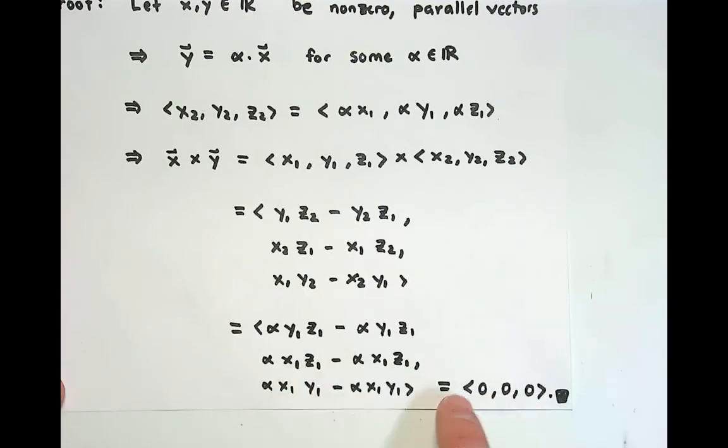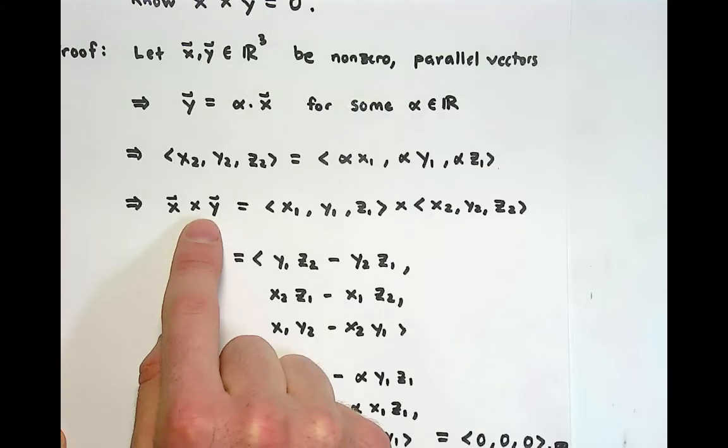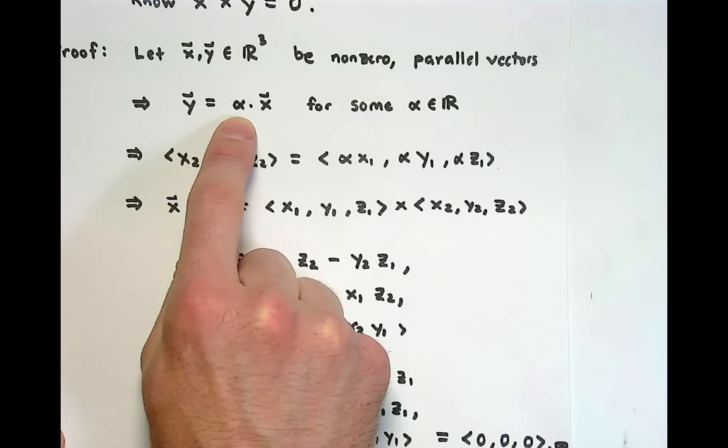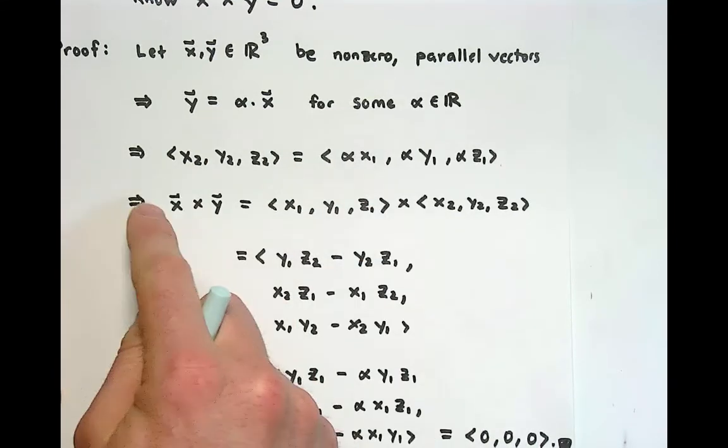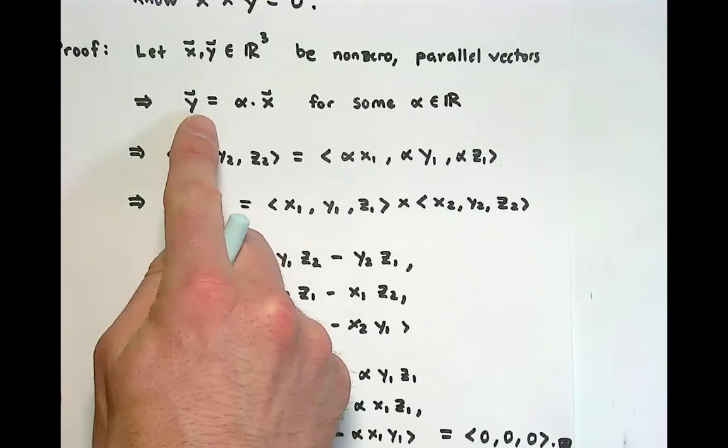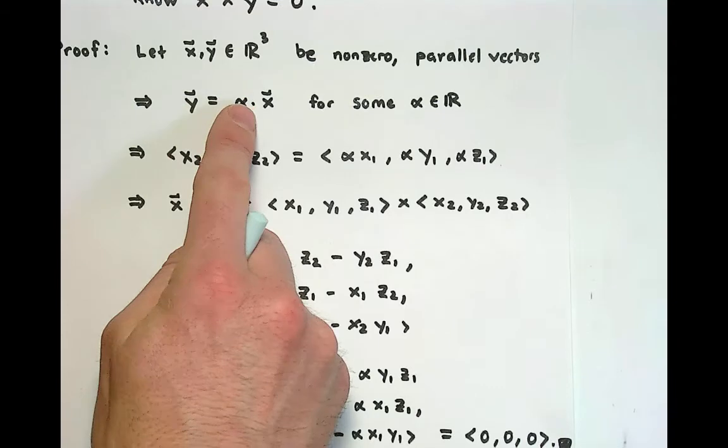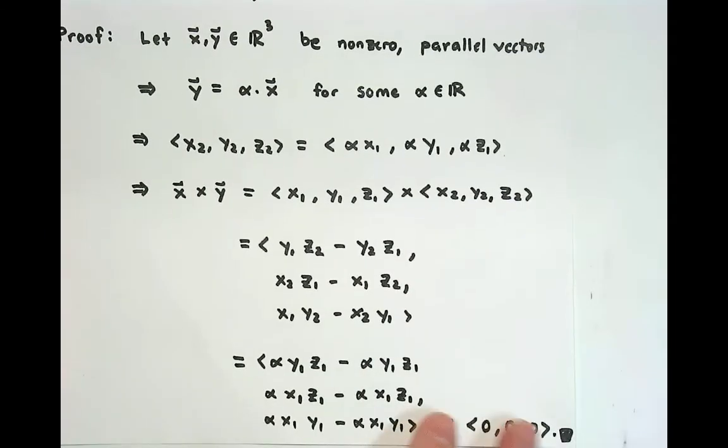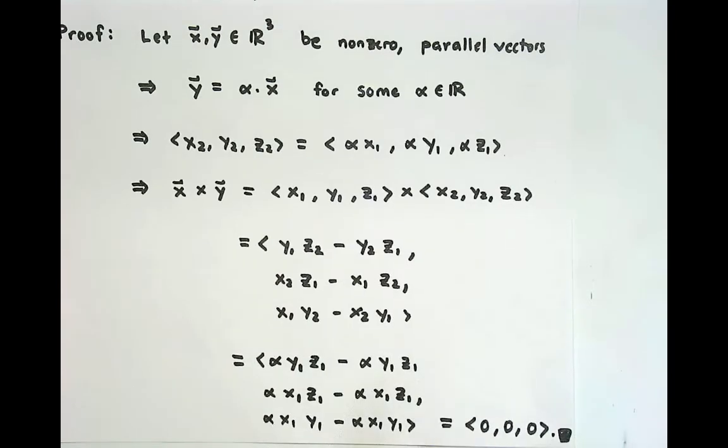This theorem actually goes both ways. Any time you know that you have a zero cross product, you conclude immediately that the two vectors that you're crossing are parallel. However, the proof of that direction depends on the sine formula, which we haven't derived yet. In the next video, we'll be working on the sine formula.